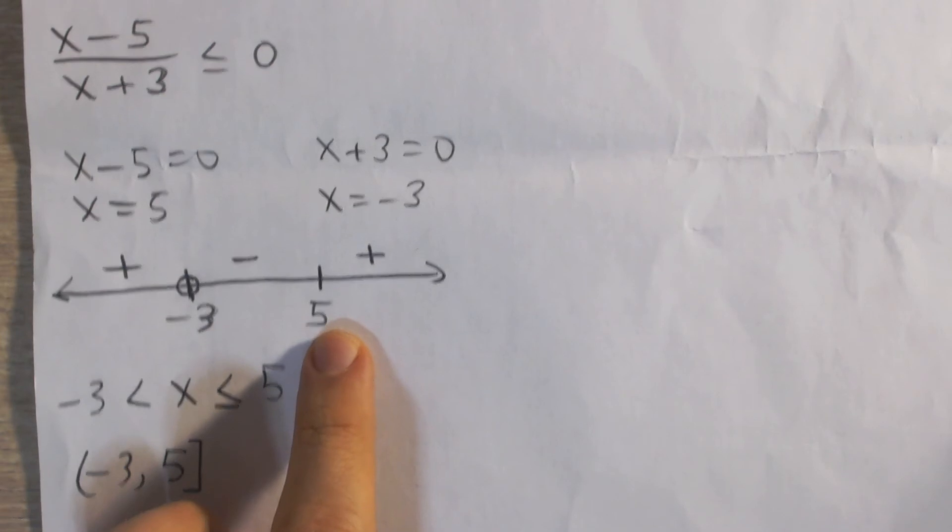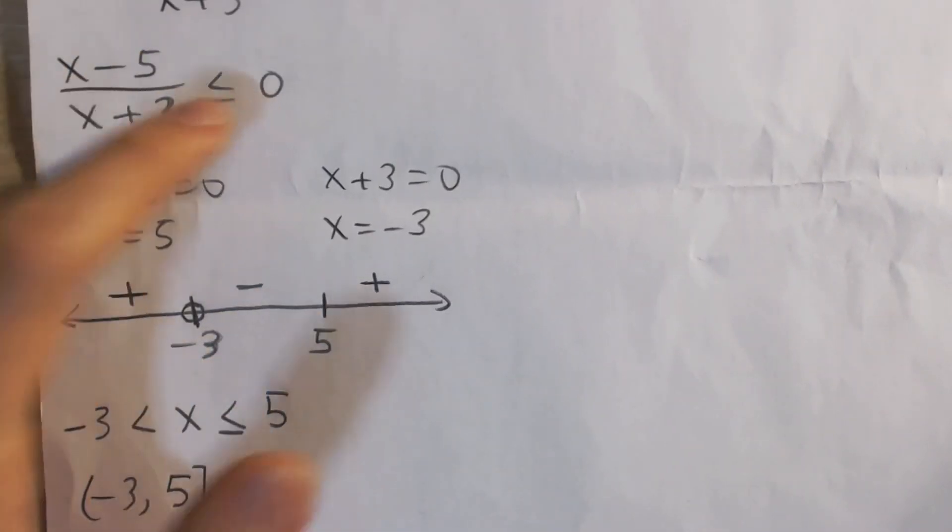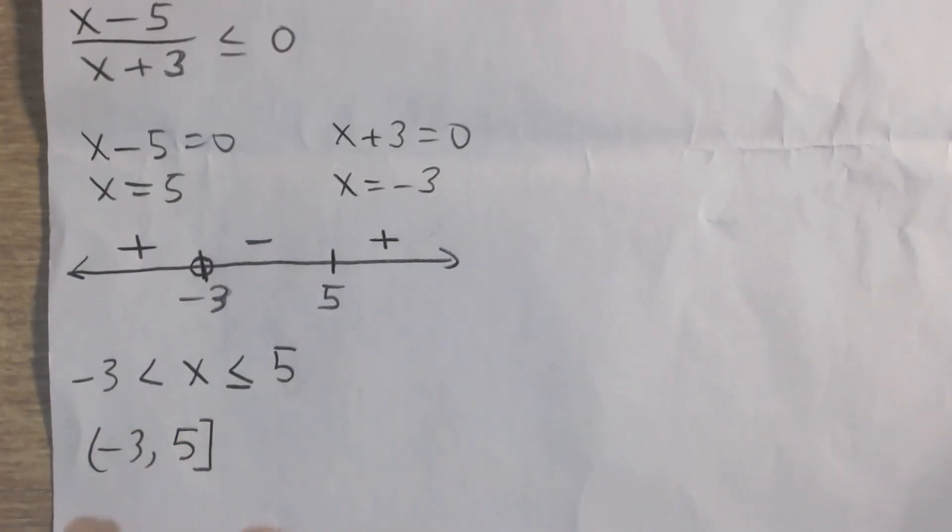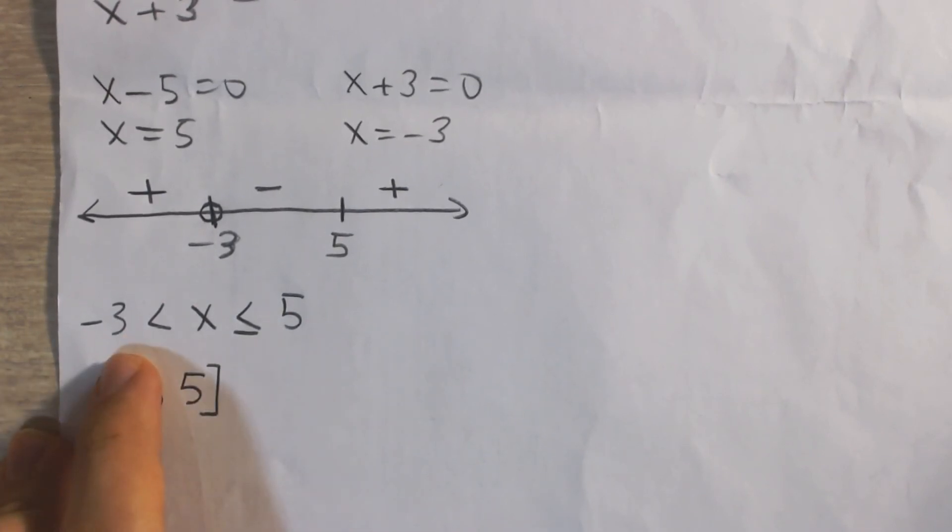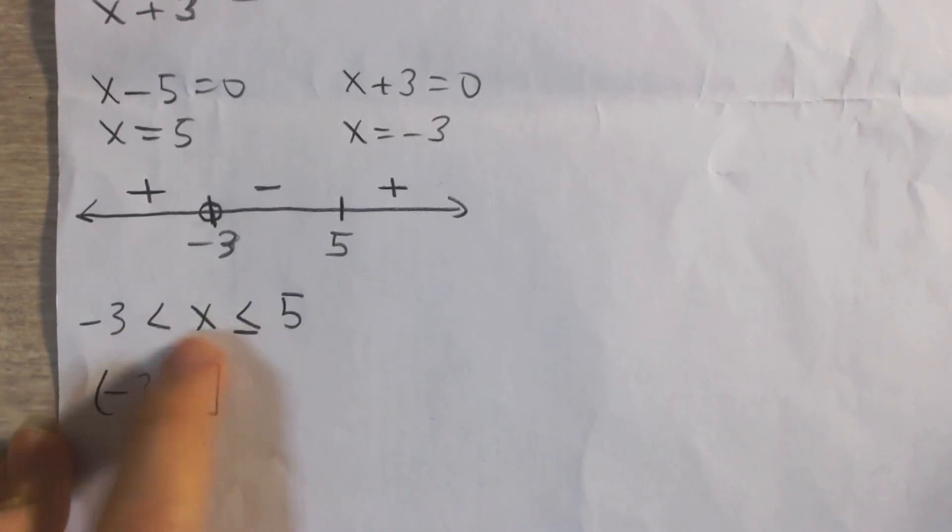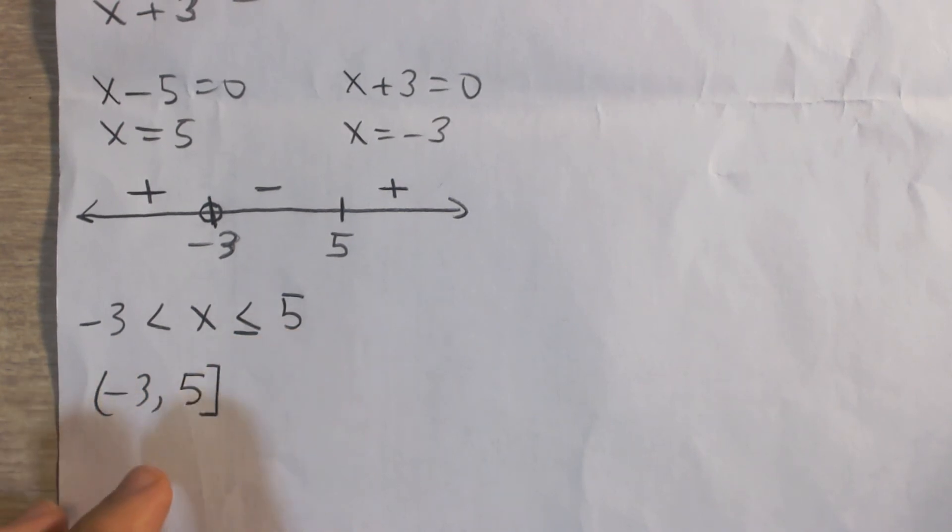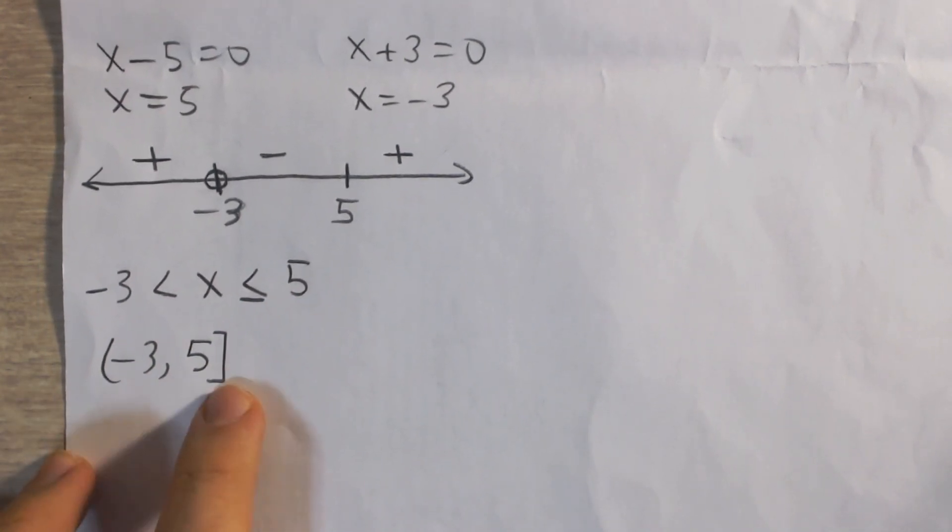But at 5, if we plug in 5 into this expression it is equal to 0, and so we include 5. And so we can either write it like this: x is greater than negative 3 and less than or equal to positive 5. Or in interval notation from negative 3 to 5, with that closed bracket, that means we're including it, and negative 3 with that open bracket which means we don't include it.